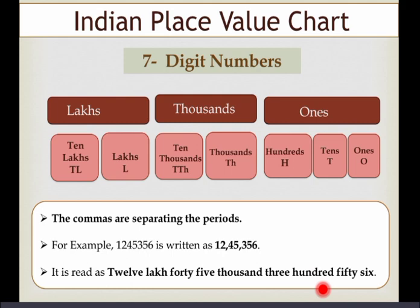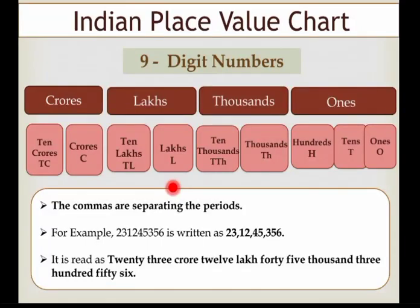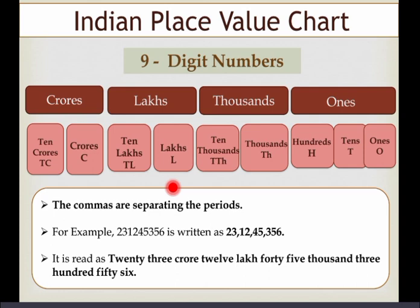Now we move to the next slide. This is also an Indian place value chart, but it is for nine-digit numbers. We remember the periods again, starting from the right-hand side: ones, thousands, lakhs, and crores.